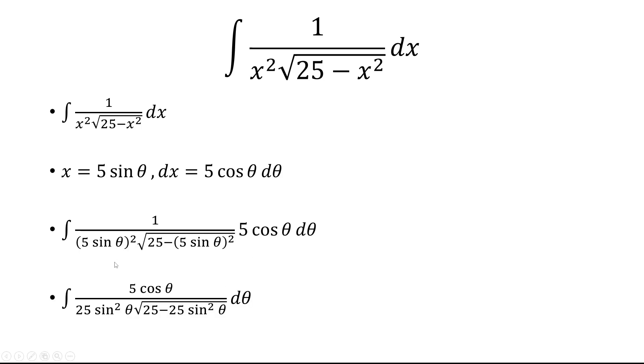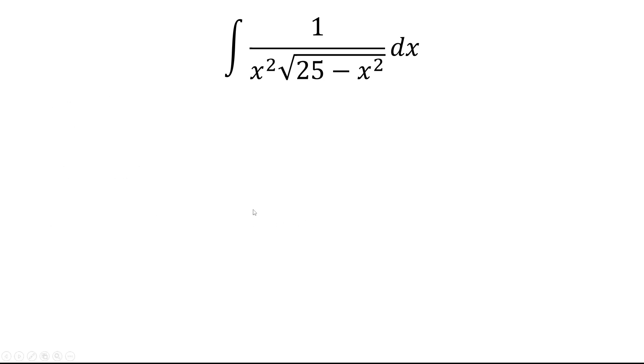So we square the 5 sine theta to get 25 sine squared theta. Now we can factor out a 25. So we'll have the quantity 1 minus sine squared.